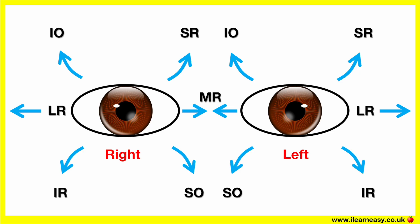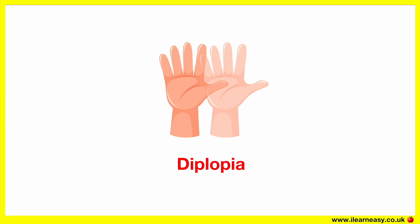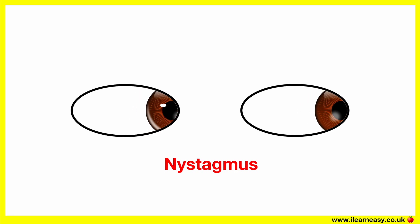Other things to check for when assessing eye movements are: ptosis, also known as a drooping eyelid; double vision, also known as diplopia; and nystagmus, which is the jerky movement seen when a patient is looking in a certain direction.